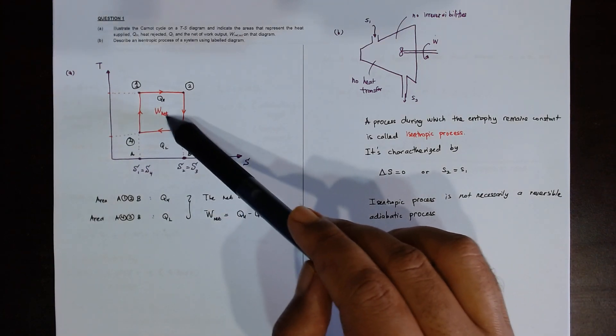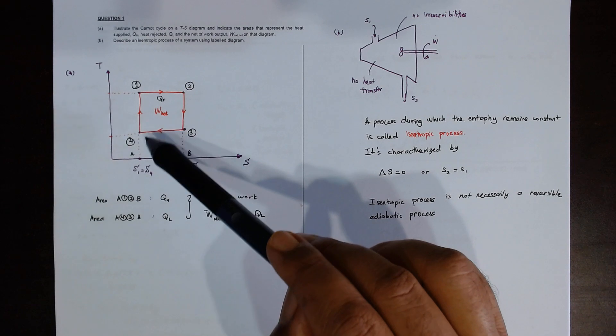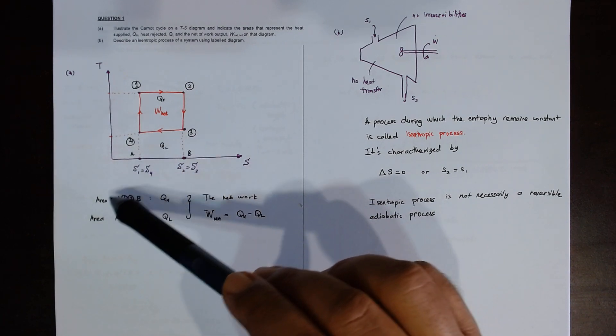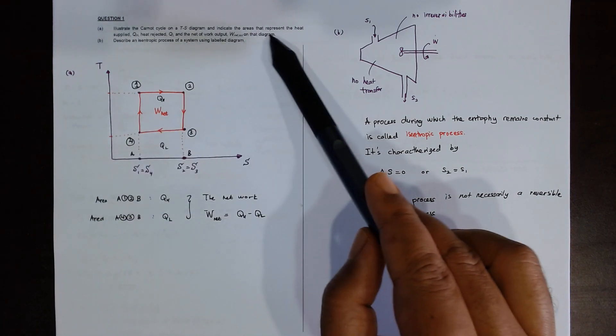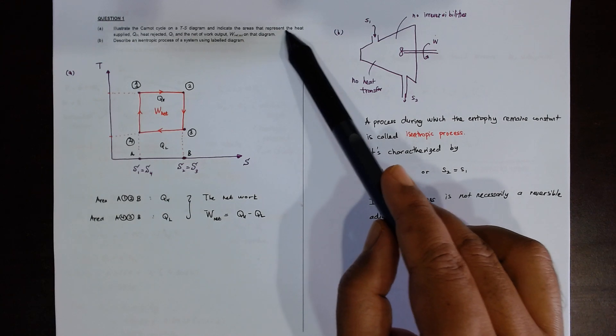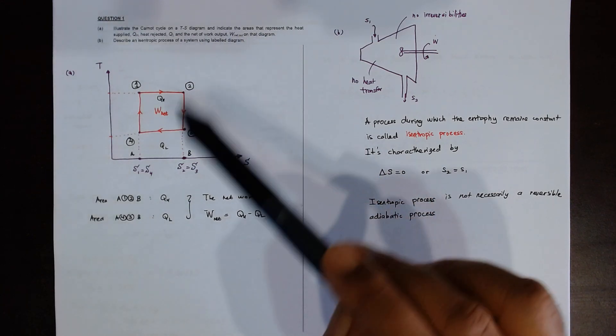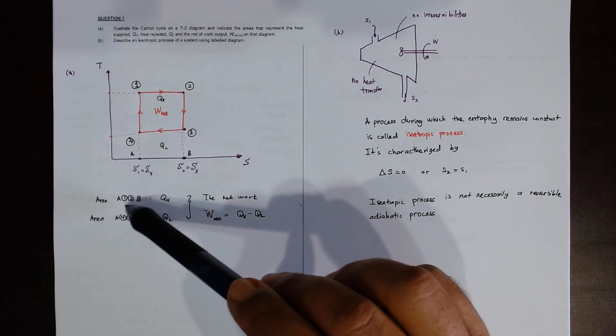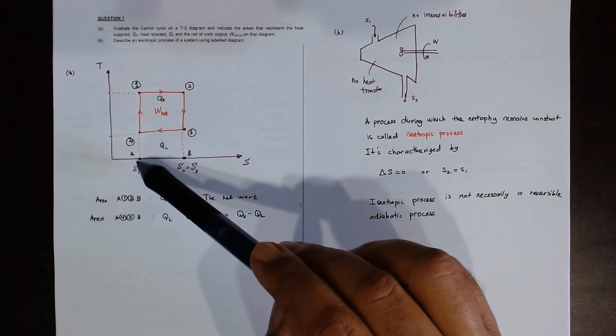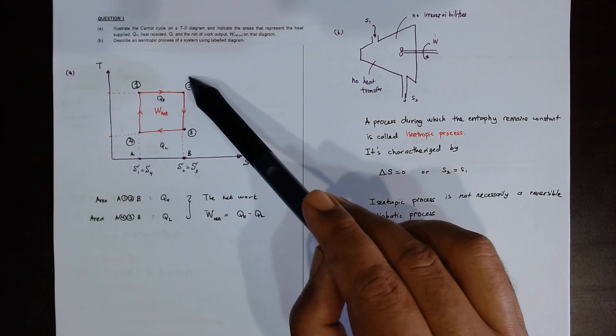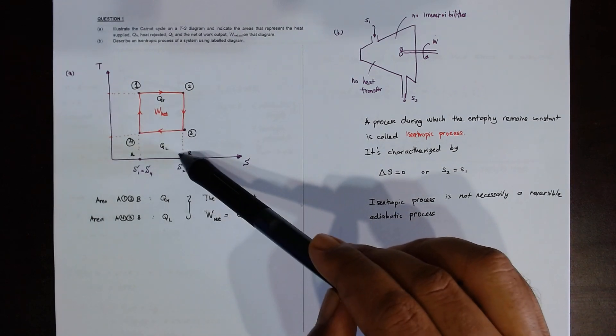So you note the W net, this area. The question said indicate the area that represents the supply QH and QL, so for the QH dot, the area is A 1 2 B, so this is the whole area.